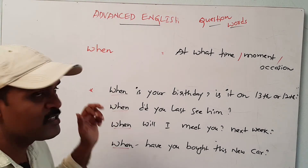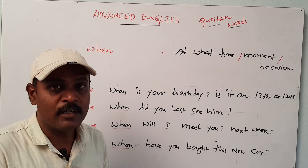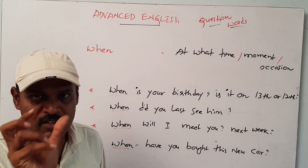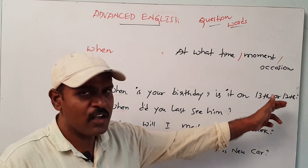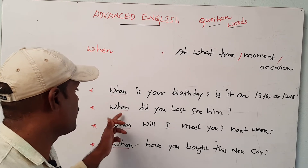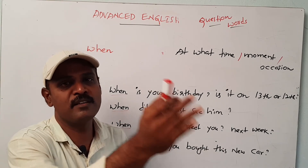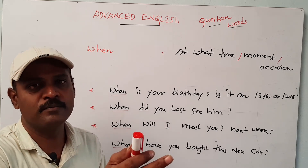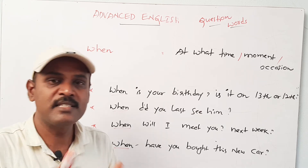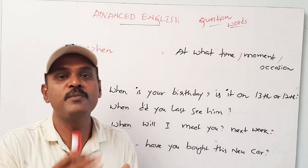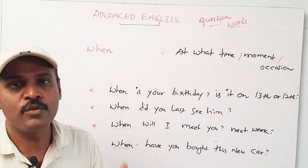For example, 'When is your birthday?' — that means tell me the exact date. Is it on the 30th or the 12th? Next: 'When did you last see him?' — some time ago he met him. At what time did you meet him? At what time did you consult him? On what occasion did you meet him? So for getting such kind of meaning, we use 'when'.